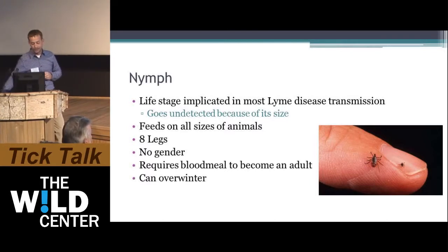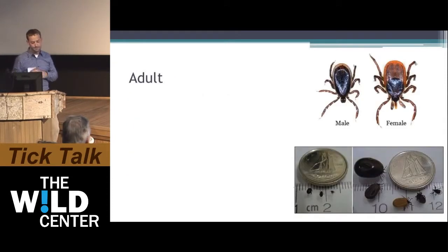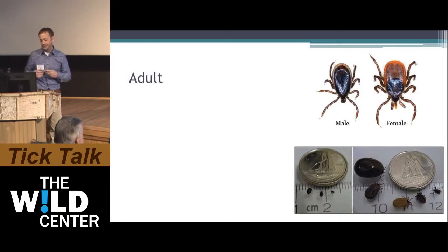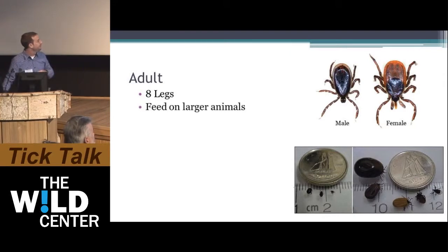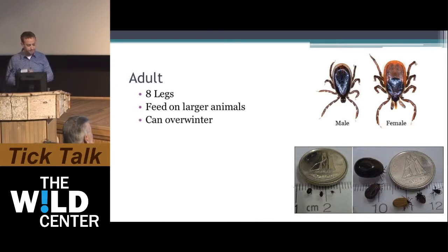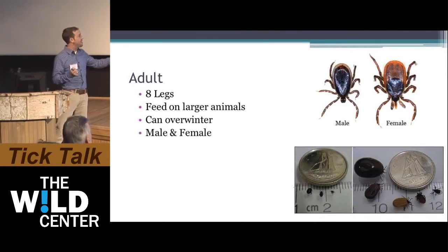The nymph requires a blood meal to become an adult. The nymph can overwinter, just like the adult female. The adults are the stage you're more likely to see because they're larger. They have eight legs like the nymph and spiders, and feed on larger animals. They can overwinter too. This is where they gain their gender — you have a male and a female Ixodes scapularis.